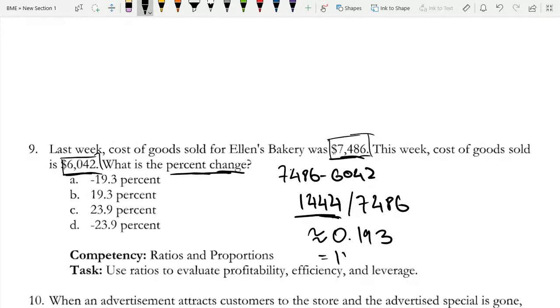So this is 19.3%. And right now we're discussing it as a positive number. However, this would be negative because I just used deviation, but we're going down. We're going from 7,486 to 6,042. So it's negative.